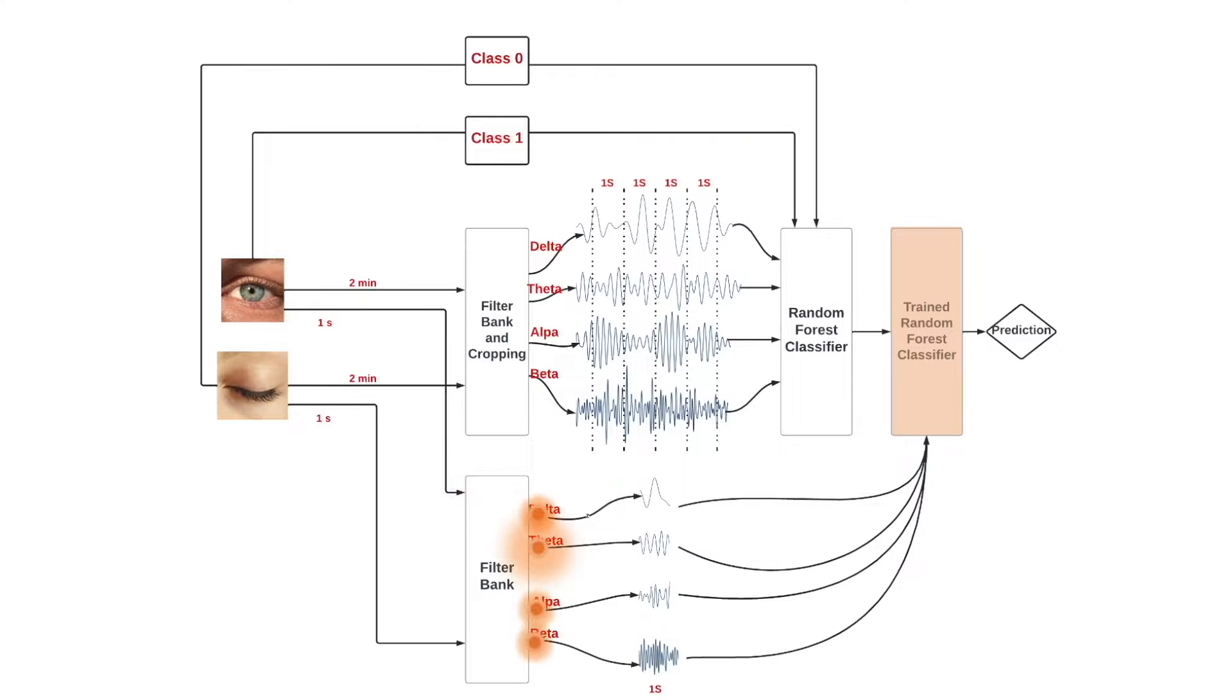Now that the algorithm is trained to recognize both states, we can feed it a digested one second window of data with the eyes open and the algorithm will output a prediction saying that the person is in state one or eyes open.